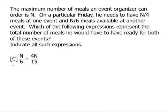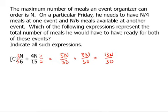Now let's look at C. The least common denominator of 6 and 15 is 30. We multiply the first by 5 over 5 and the second by 2 over 2. This gives us 5n over 30 plus 8n over 30, which equals 13n over 30. Ironically, C gives the same value as B, but both are wrong — neither equals 5n over 12. So C is not one of the answers.